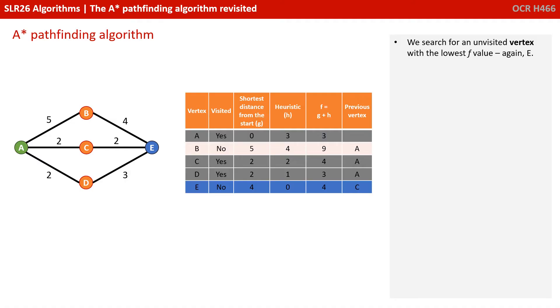So we search for an unvisited vertex of the lowest F value. Again, of course, that's E with a value of 4. And we consider each vertex that's not been visited that's connected to it, that's B.